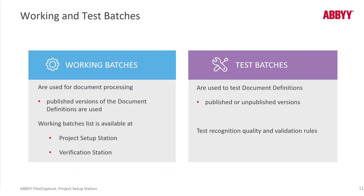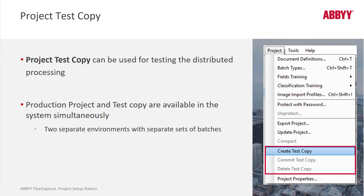FlexiCapture working batches are the batches that actually get processed in production — they will get verified and exported. Test batches are for testing; you can make a change to a document definition without publishing it and still test those changes using a test batch. We also have the ability to create a test copy. Once a project is uploaded to a server, you can create a test copy, make and test changes, and then either commit or delete that test copy.